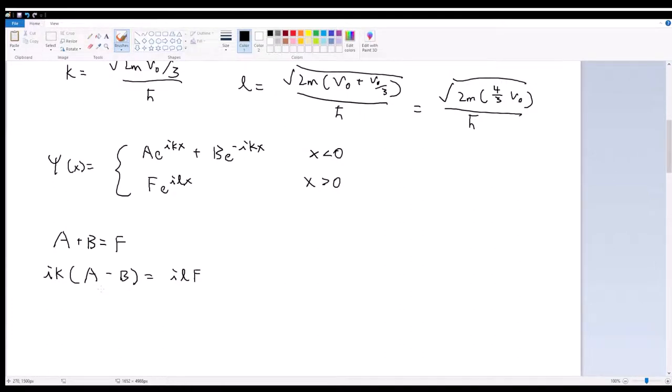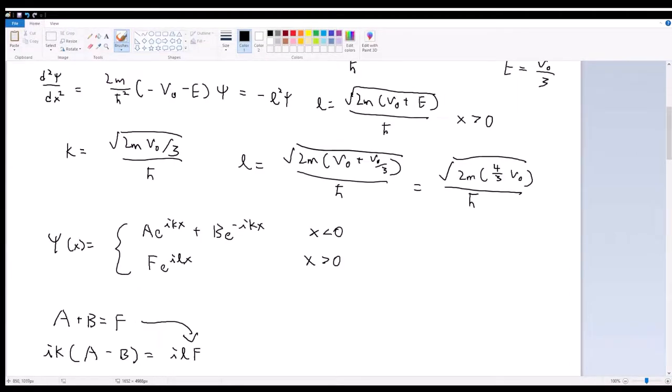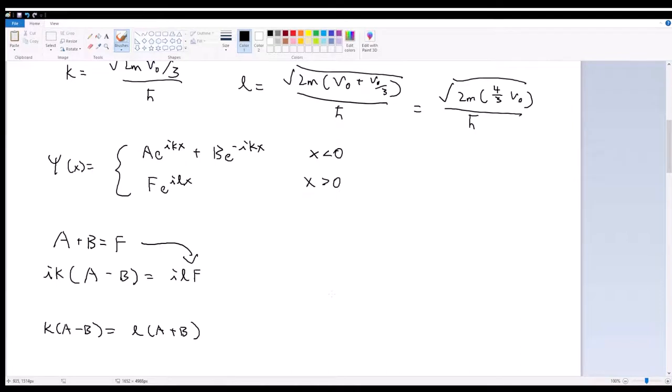So immediately, if we want the reflection coefficient, we want to solve F in terms of A and B. So we just plug this into here and we get K times A minus B is equal to L times A plus B. And let's look at K and L for a second. So K is equal to 1 over ℏ times the square root of 2M V-naught-thirds. L is equal to 1 over ℏ times the square root of 2M times 4V-naught-thirds, or otherwise known as 2 over ℏ square root 2M V-naught-thirds. So what we see is that L is just equal to 2K.